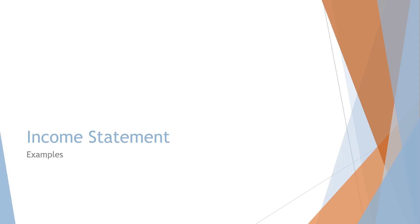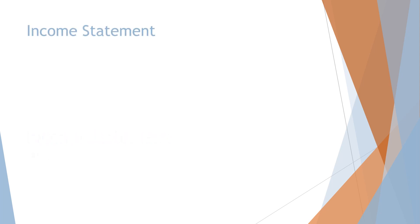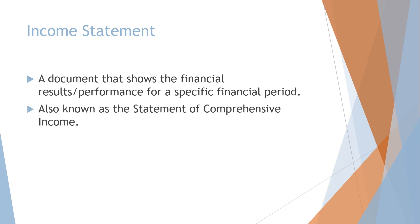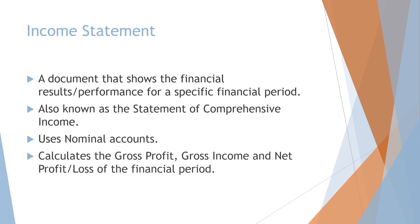We will now look at what an income statement is and how it is drawn up. The income statement is a document that shows the financial results or performance for a specific financial period, also known as a statement of comprehensive income. This document uses nominal accounts, and it calculates the gross profit, gross income, and net profit or net loss of the financial period. The layout of this document is very important.